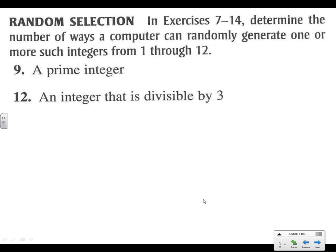Alright, 9.6 homework problems. We have to figure out the number of ways a computer can randomly generate one or more integers from the numbers 1 through 12, and we want just the integers that are divisible by 3. So we're looking for all the integers from 1 to 12 divisible by three: 3, 6, 9, and 12. There are 4 of those, so there are 4 ways. That's all there is to it on the first one.